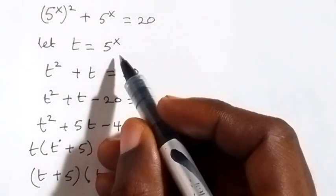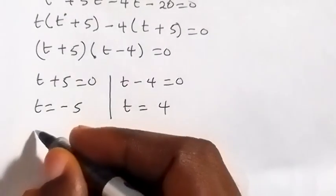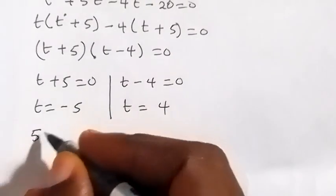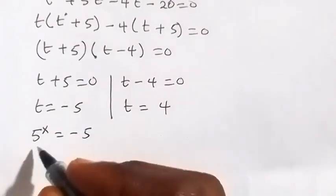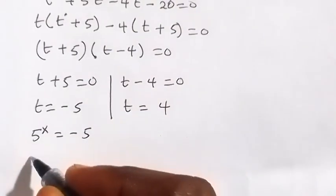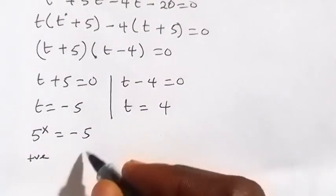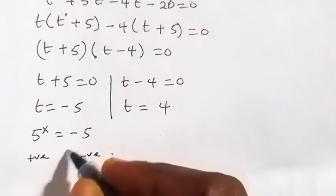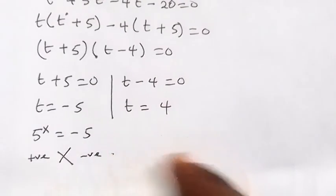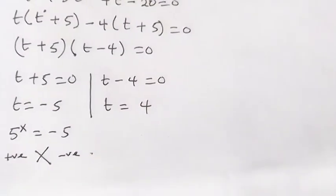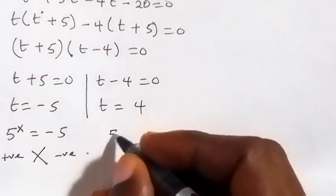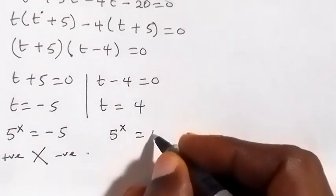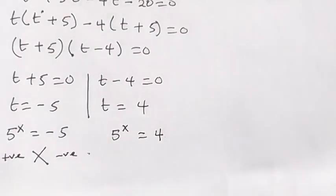Recalling that t equals 5 raised to power x, we substitute back. From the first case, 5 raised to power x equals minus 5. But the value of 5 raised to any power x is always positive, and this is negative, so there is no solution here. From the second case, 5 raised to power x equals 4.